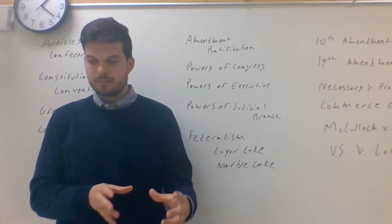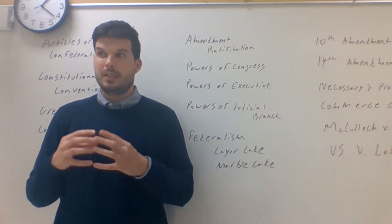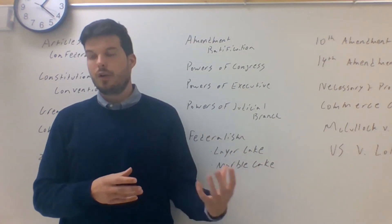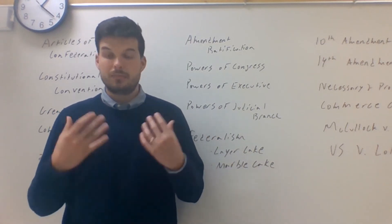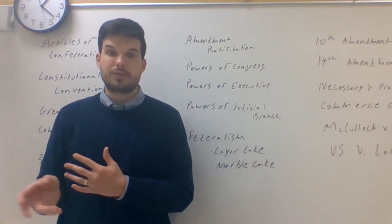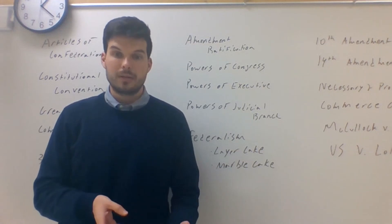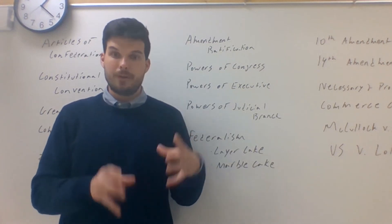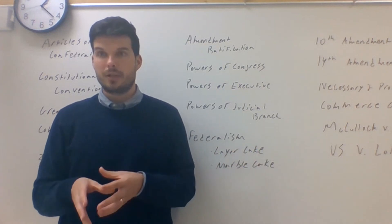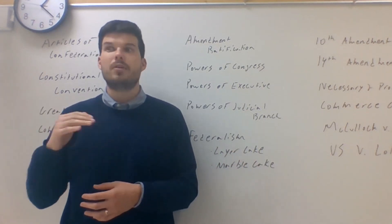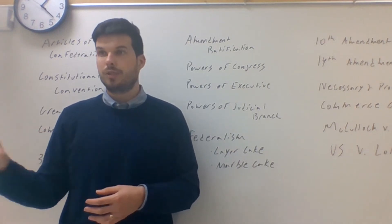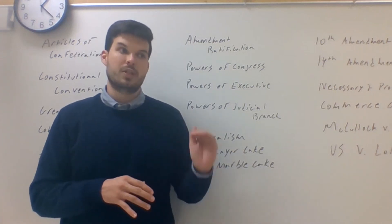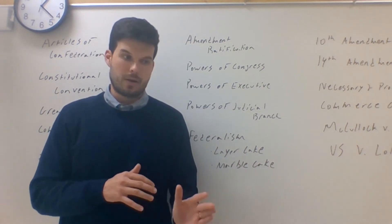So let's think about an example of all four. OK, the federal government wants to give the state government money to work on transportation. OK, if it was a block grant, the federal government would give the state government money and say, here you go, do with it what you will. Sometimes it'll be spent on transportation, sometimes it won't. If they do a categorical grant, they say, OK, here's $100 million for transportation, spend this on transportation. A funded mandate is, OK, here's $100 million for transportation, make sure that the speed limit is never above 60 miles per hour, wherever you go, you need this many lanes, all of that stuff. The unfunded mandate is no money for transportation, all speed limits are now 60 miles per hour. So those are brief examples.